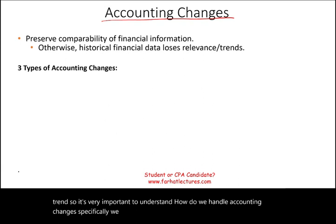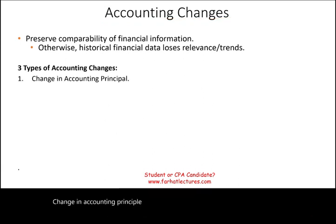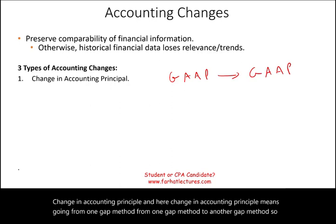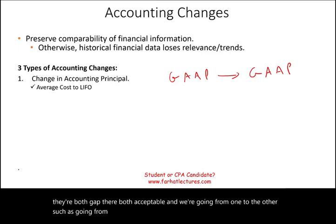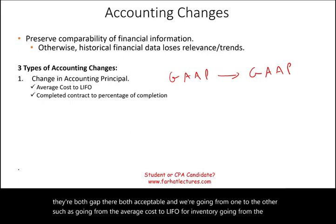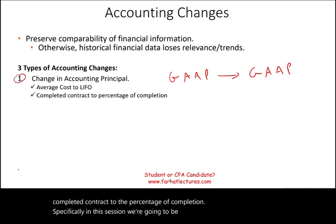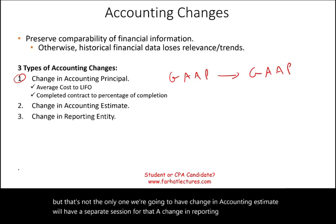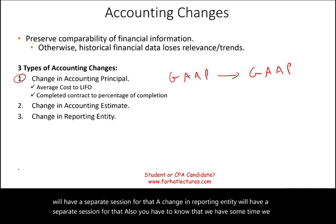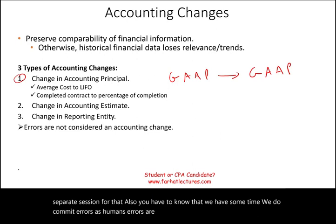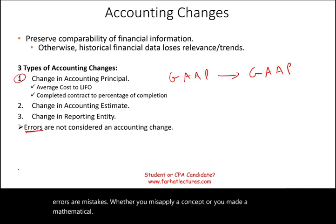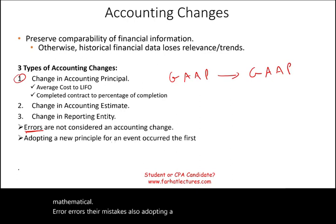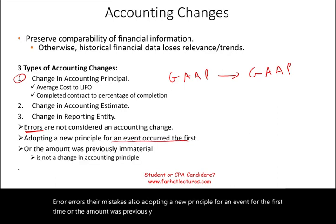Specifically, we deal with three types of accounting changes. First, change in accounting principle, which means going from one GAAP method to another GAAP method — they're both acceptable — such as going from average cost to LIFO for inventory, or from the completed contract to the percentage of completion. Errors are not considered an accounting change; they're mistakes, whether you misapply a concept or make a mathematical error. Also, adopting a new principle for an event for the first time, or when the amount was previously immaterial, is not considered an accounting principle change.